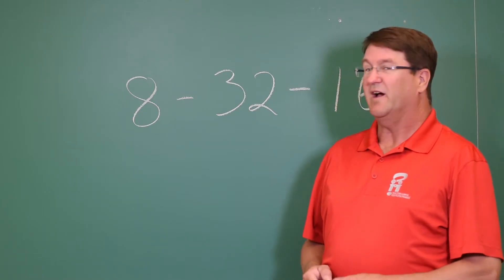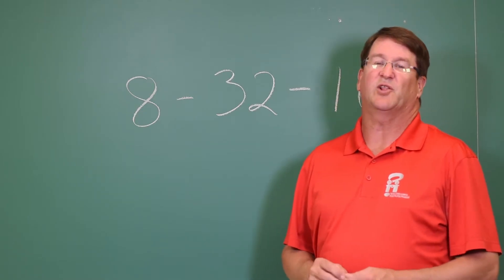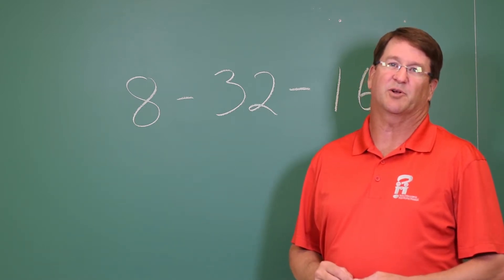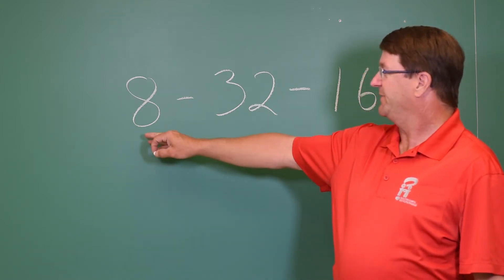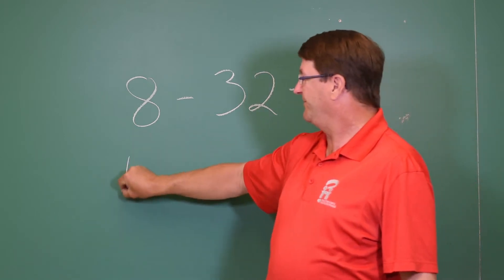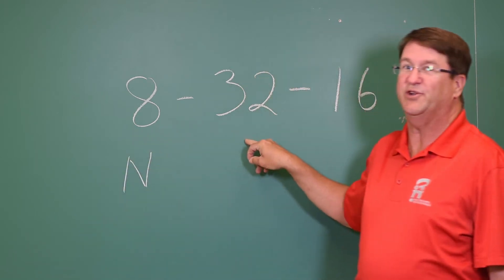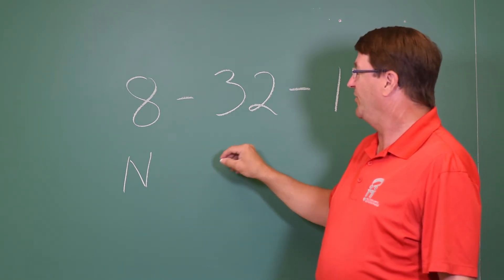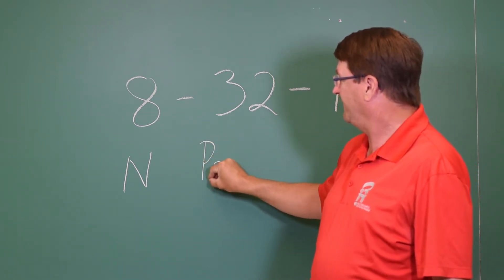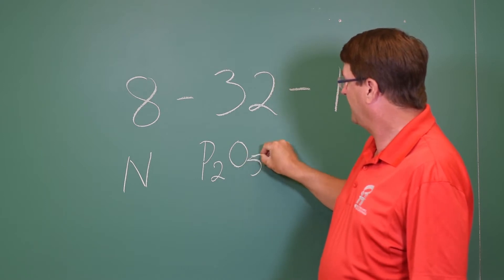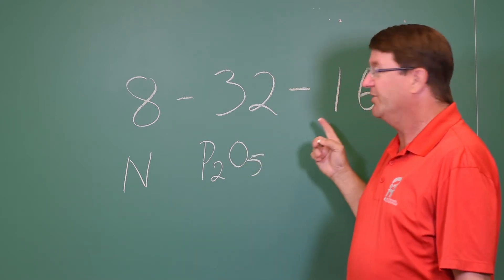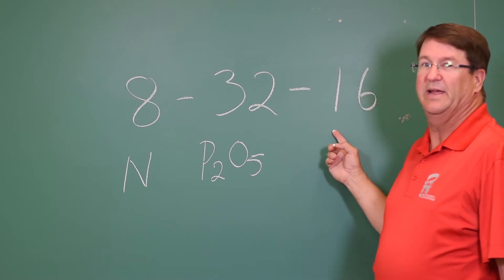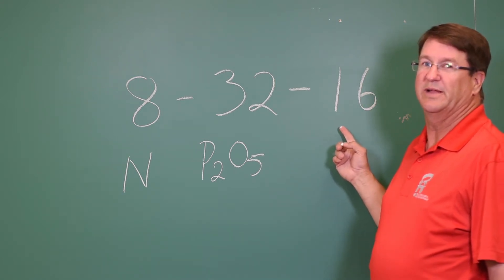On the board behind me, I've put the fertilizer analysis of a common type of fertilizer that you might come across. The 8 is the percent nitrogen, the 32 is the percent available or soluble P2O5, and the third number — the 16 in this case — is the percent available K2O.